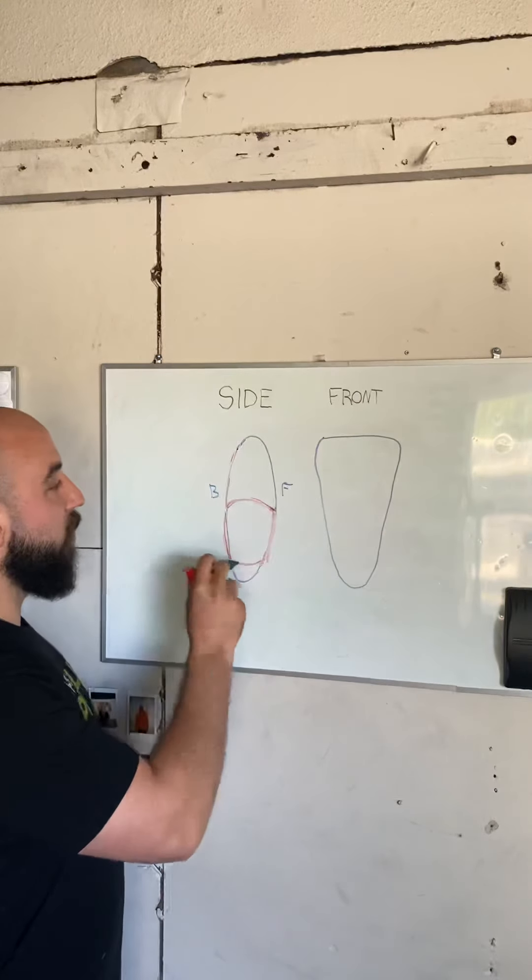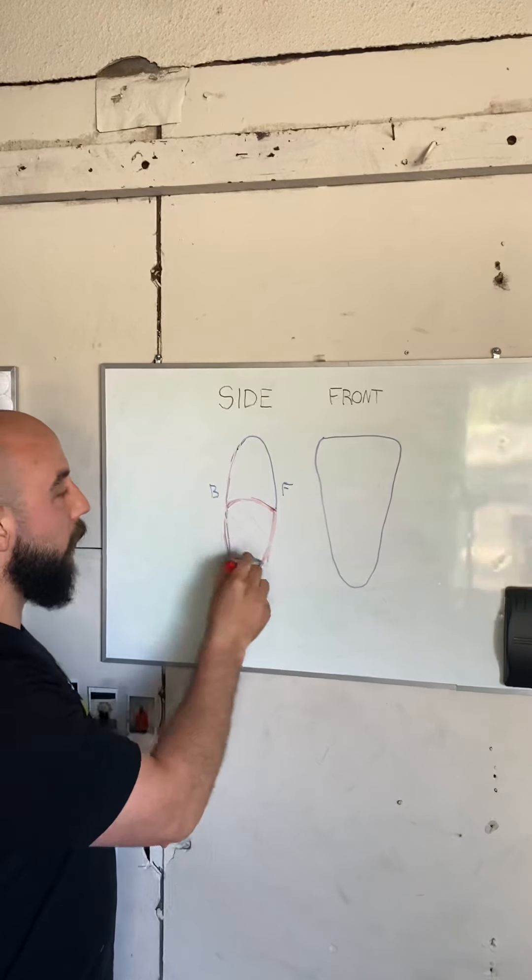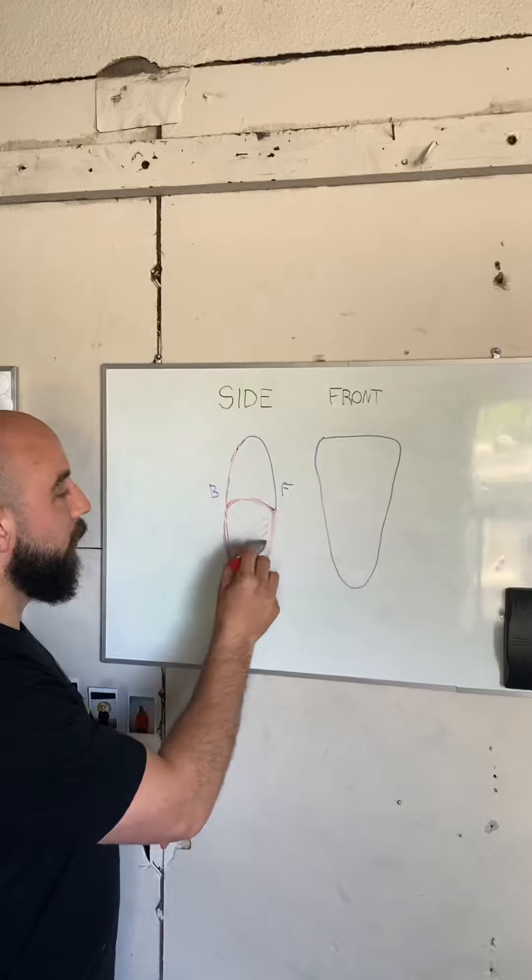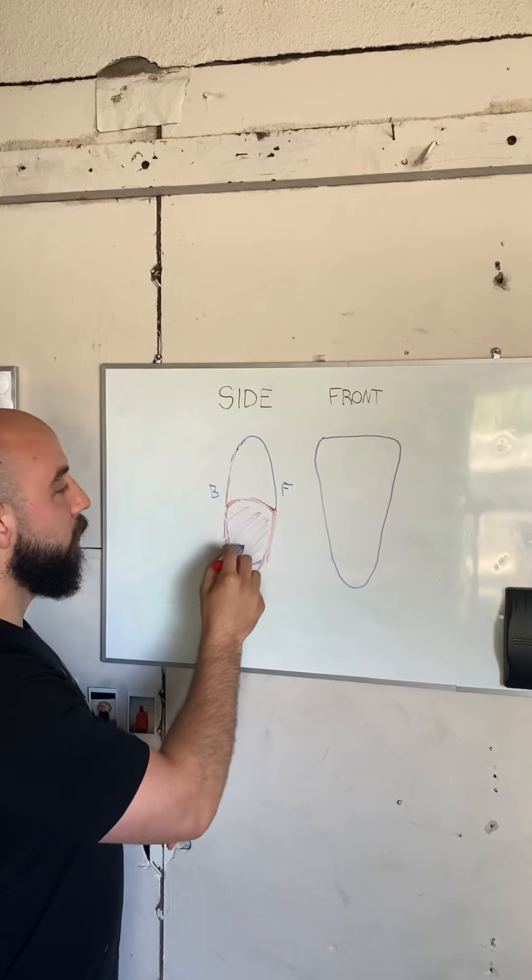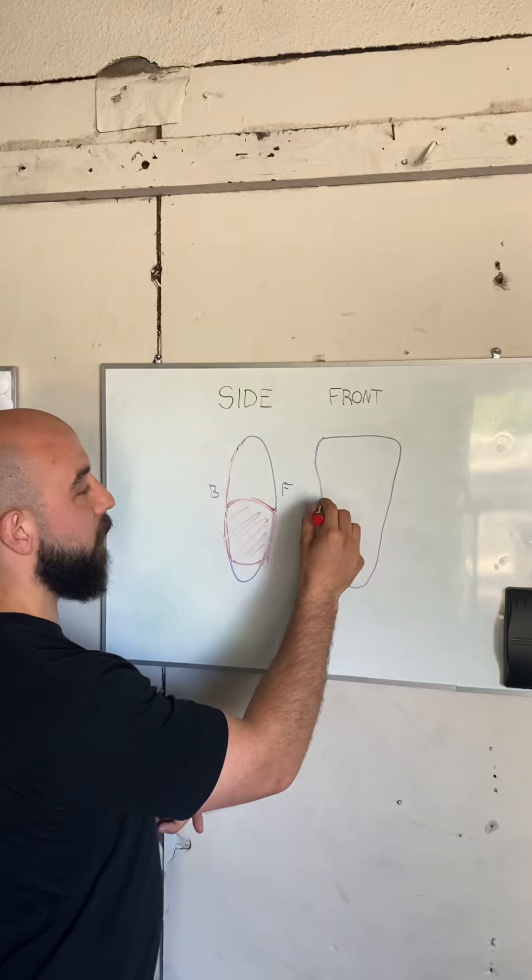And then we've also got on the sides, we've got our internal external obliques that kind of run laterally like so. Now from the front, obviously it looks pretty similar.